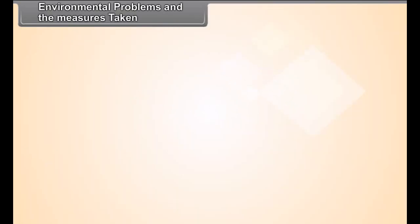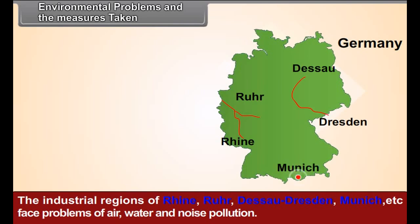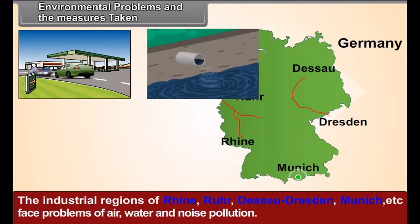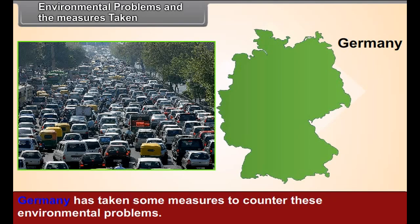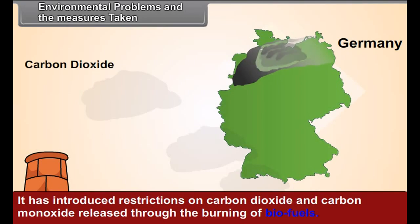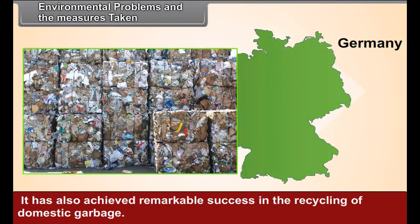The industrial regions of Rhine, Ruhr, Saarbrücken, Dresden, Munich, etc. face problems of air, water, and noise pollution. Similarly, heavy traffic in urban areas has led to noise and air pollution. Germany has taken measures to counter these problems — it has introduced restrictions on carbon dioxide and carbon monoxide released through the burning of biofuels, and has also achieved remarkable success in the recycling of domestic garbage.